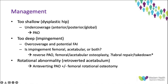Rotational abnormalities such as a retroverted acetabulum can be corrected by an anteverting periacetabular osteotomy, which highlights the need to assess femoral version preoperatively and consider the need for a femoral rotational osteotomy as part of the procedure.